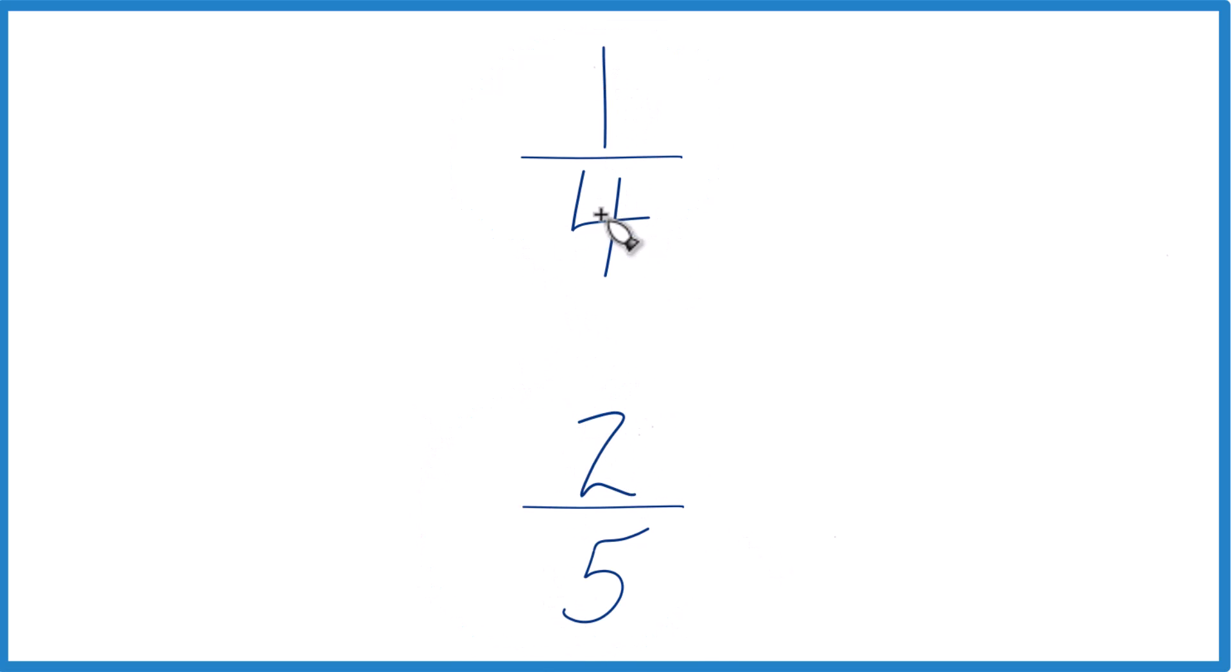First, you could just divide 1 by 4 on a calculator, get a decimal, divide 2 by 5, get a decimal, and then compare them. And that would tell you which fraction is larger, 1 fourth or 2 fifths.